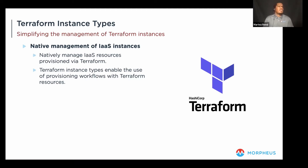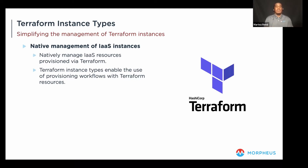A question came through: by using infrastructure as code, do we have the capability of deploying to multi-cloud using the same blueprint for a multi-tier application? It's certainly possible but there is some complexity. Currently, Morpheus has the ability to deploy only to a single cloud at a time. There are aspects that would constrict that, so at the moment I do not believe there is the ability to deploy to multiple clouds using the same blueprint simultaneously.